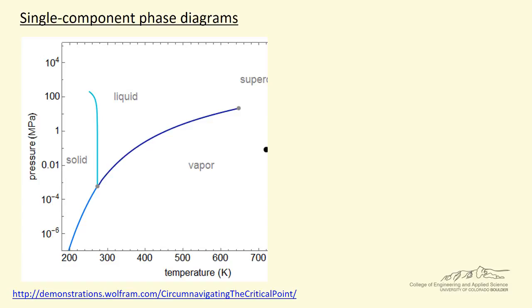In this screencast I am going to discuss diagrams used to represent phase behavior for a single component, and I'm just going to briefly look at a number of diagrams. At the bottom of each you'll notice a link to an interactive simulation that allows you to change things and change locations of a point, for example, and observe behavior. I want to briefly go over each of the diagrams, and there are a number of screencasts specifically for each individual diagram.